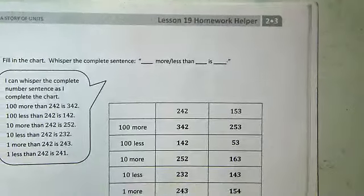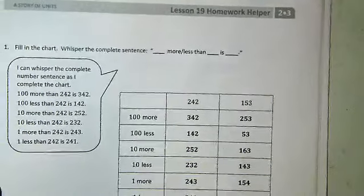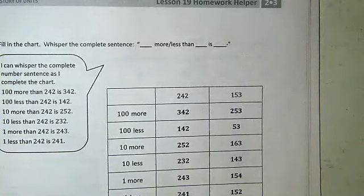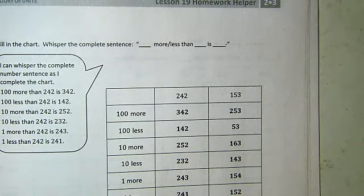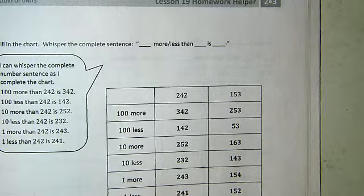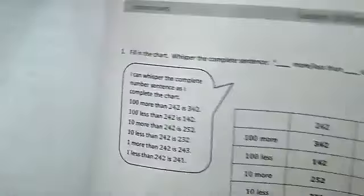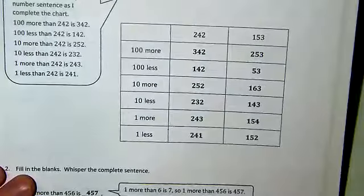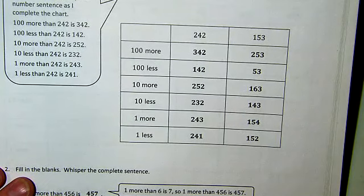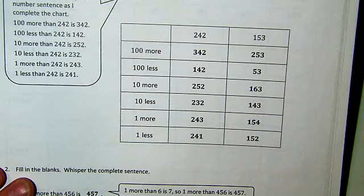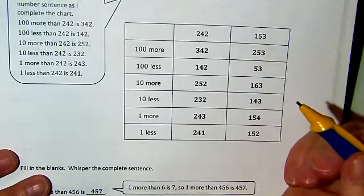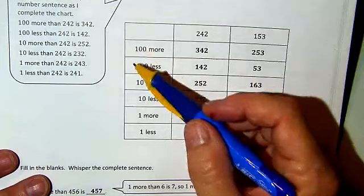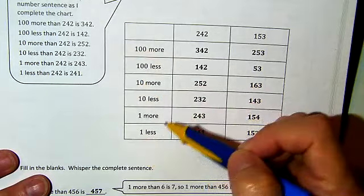Hey, everybody. Happy Friday. We are on Lesson 19, starting off with the Homework Helper on page 155. We're doing pretty much the same thing — we are still comparing some numbers, but this time we are producing those numbers with the more and less and specific amounts.